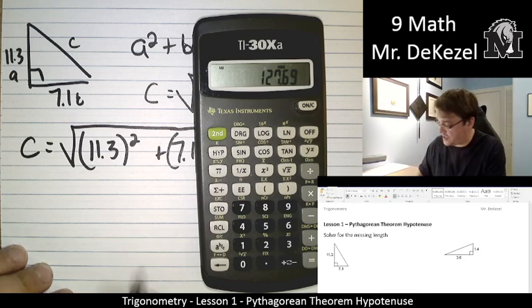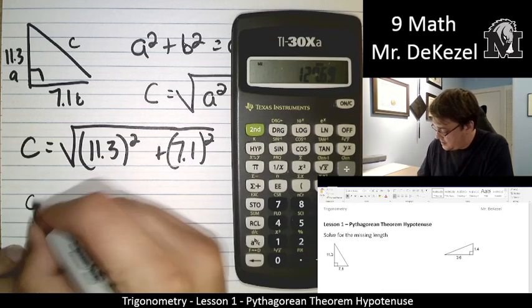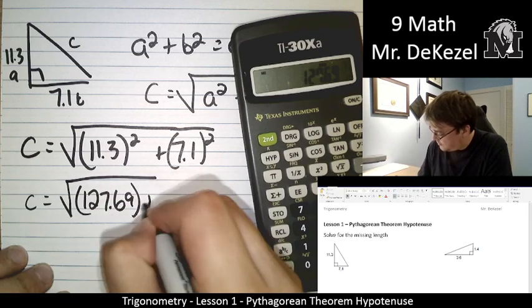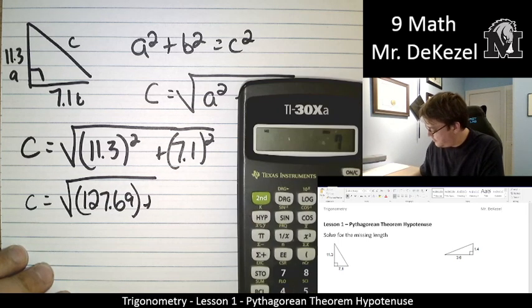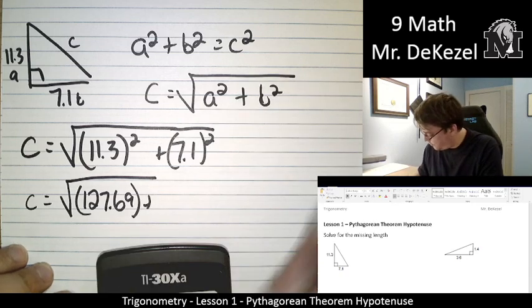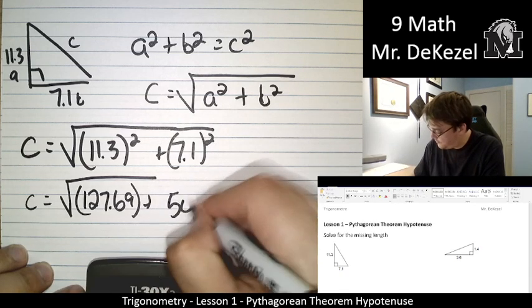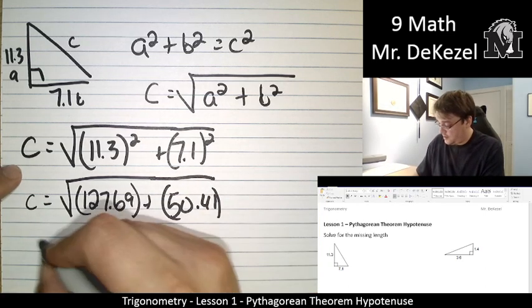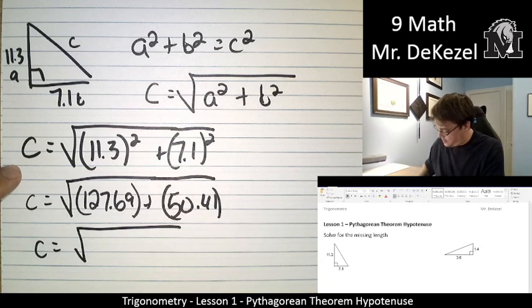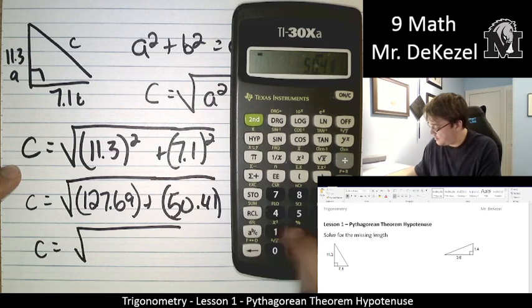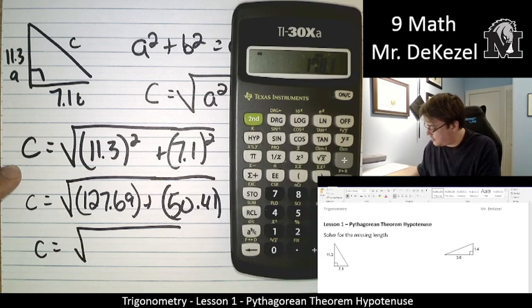That equals 127.69. So C is equal to the root 127.69, 7.1 times 7.1, that's 50.41. We're going to go ahead and add these together. C is equal to the root of 50.41 plus 127.69, that's 178.1.